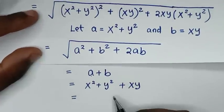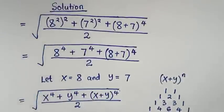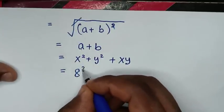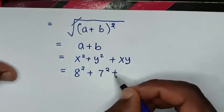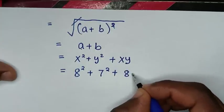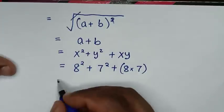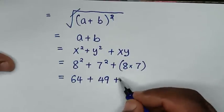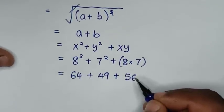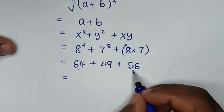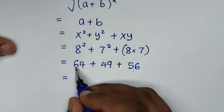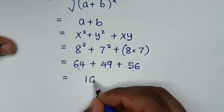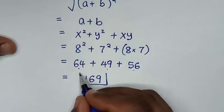Taking the square root of (a+b)² gives a+b, which is x²+y² + xy. Substituting back x=8 and y=7: 8² + 7² + 8×7 = 64 + 49 + 56 = 169. So 169 is the final answer to this problem.